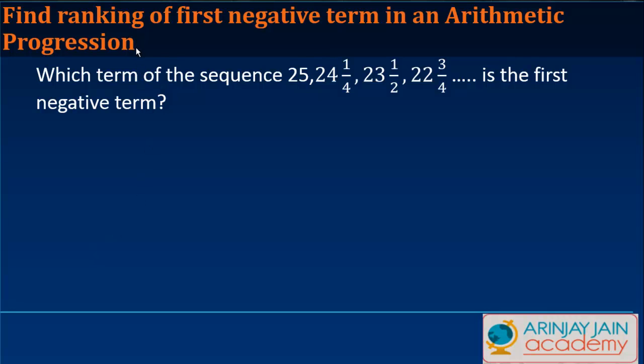In this video we are going to find out how do you find the ranking of the first negative term in an arithmetic progression. So let's say you have an arithmetic progression which is given to us: 10, and then is decreasing by 3.